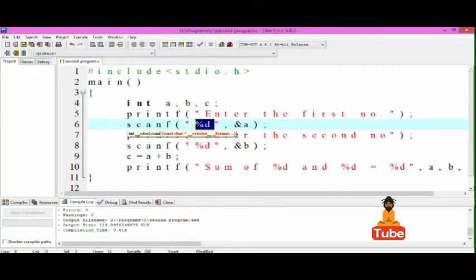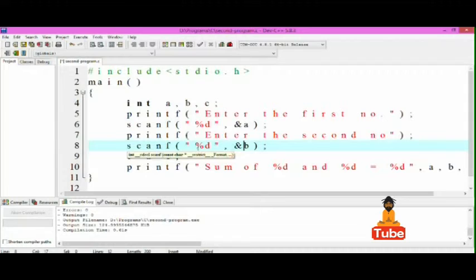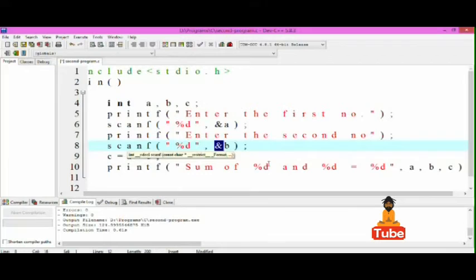And I want to store it on the address of a, the memory location that has been assigned to a. Similarly, we're doing the same here. We're storing a value of integer type on the address of b.